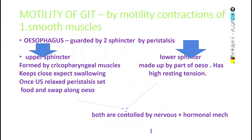Moving further to motility of the GIT: motility is by the contractions of smooth muscles. The oesophagus is guarded by two sphincters and motility is accomplished by peristalsis movement. There is an upper sphincter and a lower sphincter. The upper sphincter is formed by the cricopharyngeal muscle, which remains closed except during swallowing.